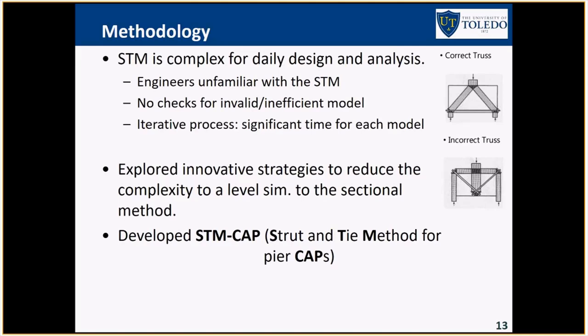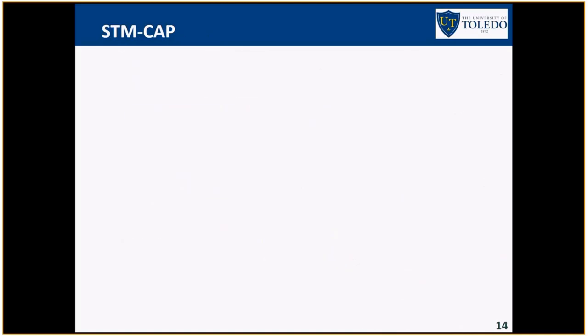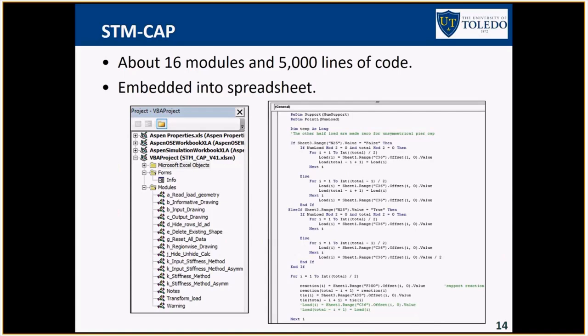So as a result, we developed a computational tool, which we named it as strut-and-tie method for pier caps or STM cap. So Papu spent a lot of time on this. This is the logo that he created for this. It is a code. He wrote about 5,000 lines, 16 modules. It's a computer code. We didn't want to create a new program because you need to learn something new. We incorporated this into Excel, right? So you can just open Excel. Everybody has Excel. Nothing needs to be installed and you just use it. One thing which is innovative for this code is that it shows you graphically. You input all the dimensions and you see color-coded graphical structure drawn for you to scale. So you see how the struts are forming, how the ties are forming, and so on. So that's, I think, the part that we spend lots of time on. You will see input drawing, output drawing, hydros. You can see lots of subroutines to display the geometry.